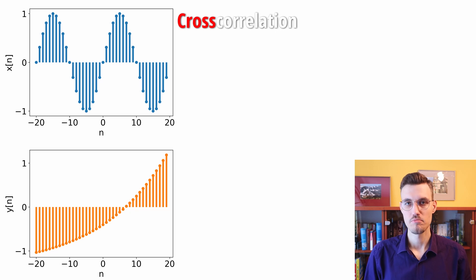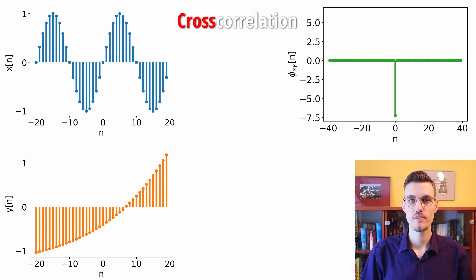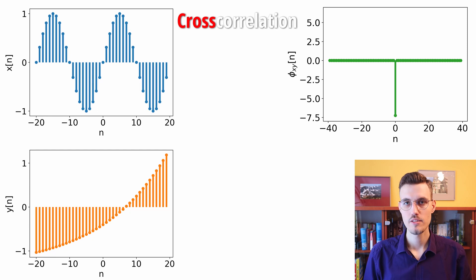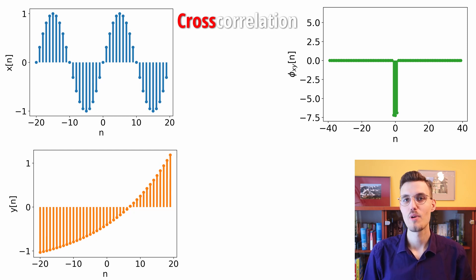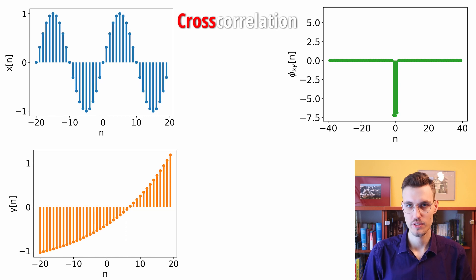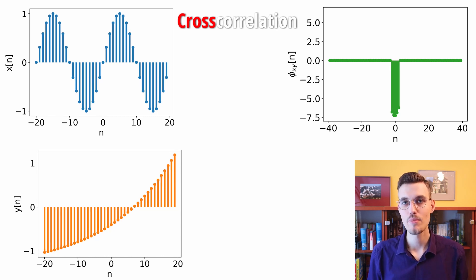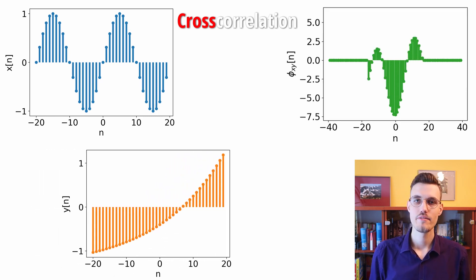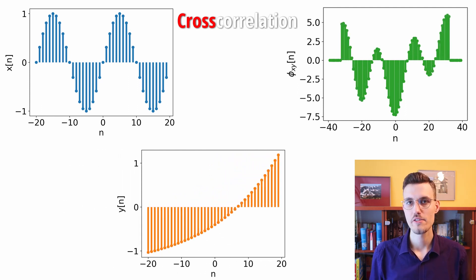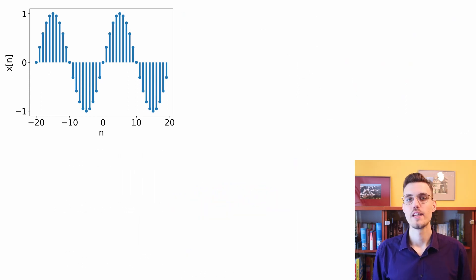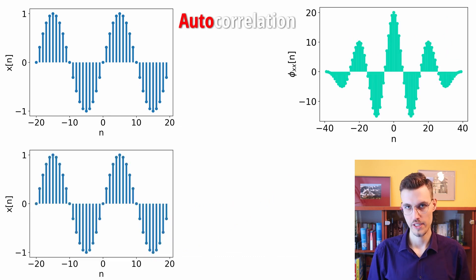We then multiply their values and sum them up, and we obtain one value — one sample of the correlation function. Then we shift them by one sample, again repeat this procedure of multiplying their values and summing. Then we increase the sample lag more and more and obtain the values of the correlation function for arbitrary time lags. If we calculate the correlation of a function with itself, it's called autocorrelation.